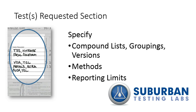Take something as simple as Total Coliform. If you write coliform on the Chain of Custody form, we have to ask ourselves: is that fecal coliform, Total Coliform Presence-Absence, or Total Coliform Enumeration? Running the wrong method has irreversible consequences because the entire sample is consumed during analysis. Also, holding times may vary.